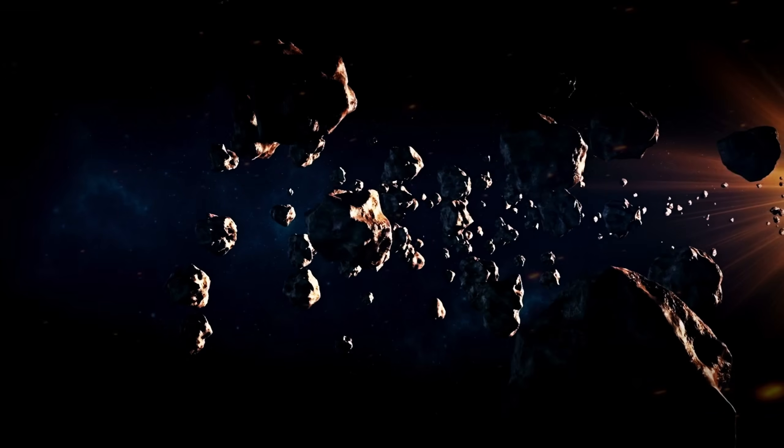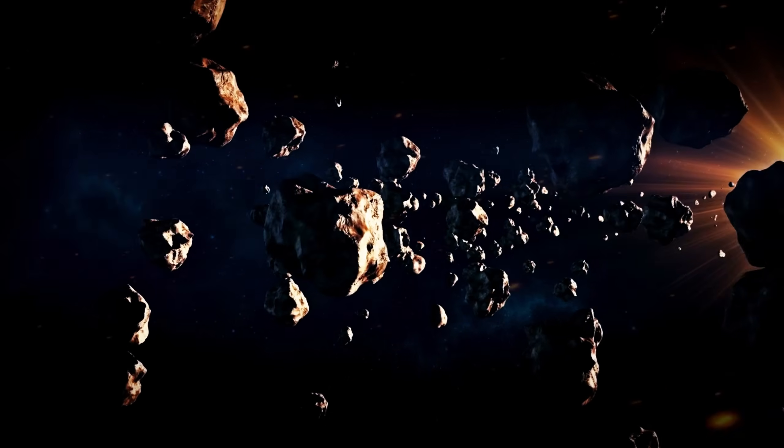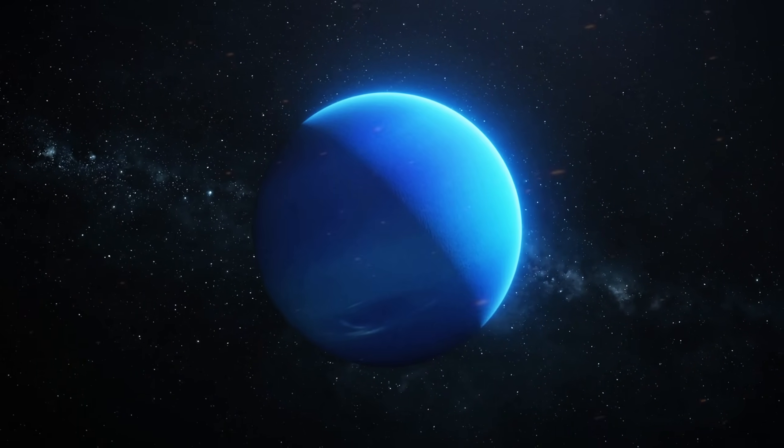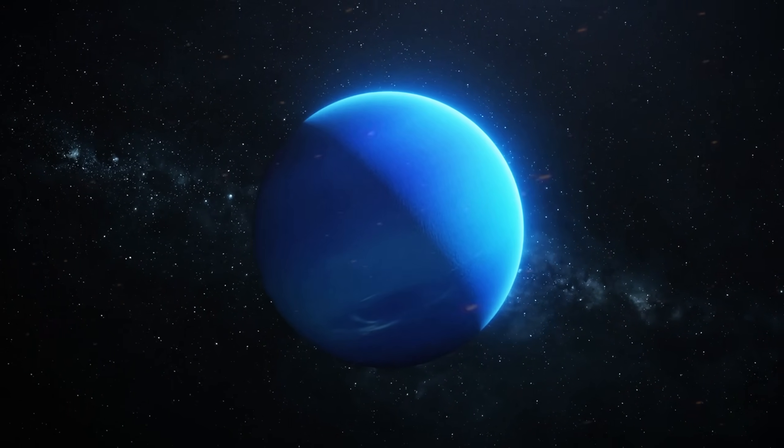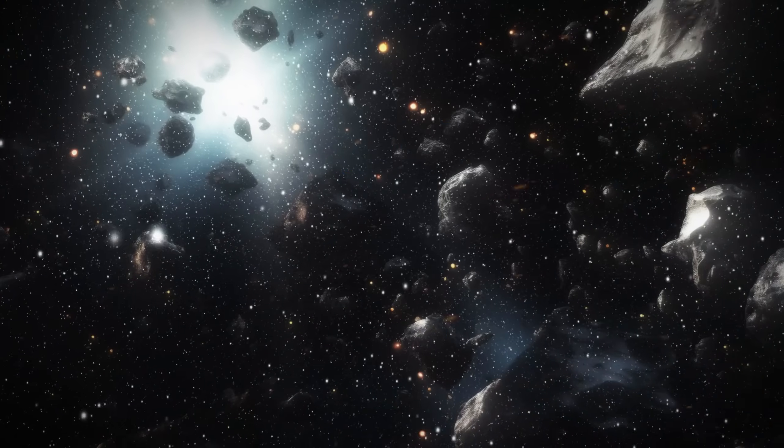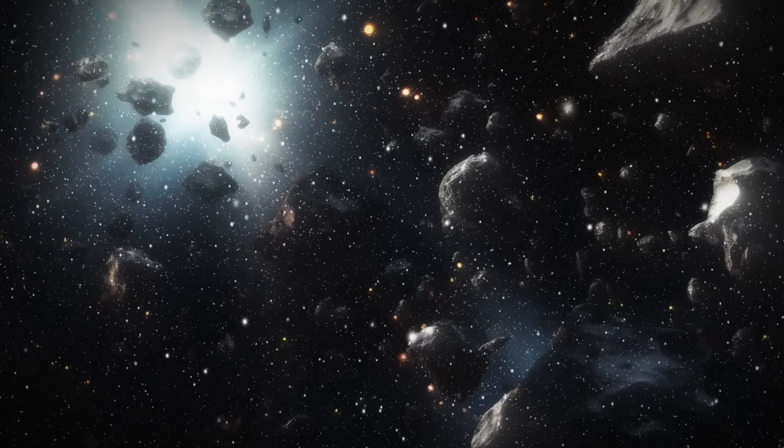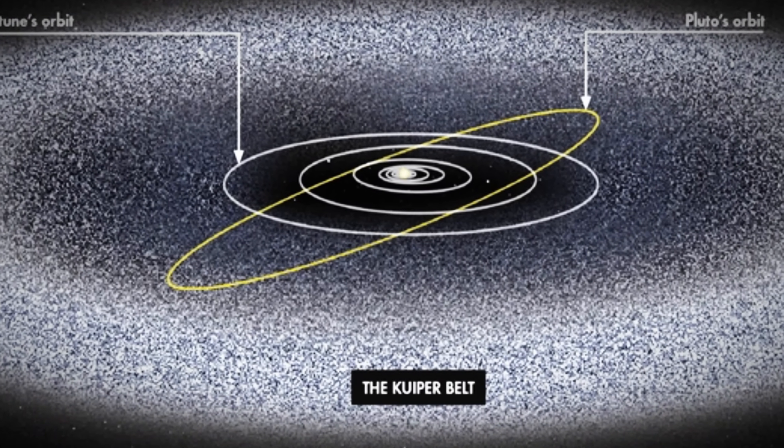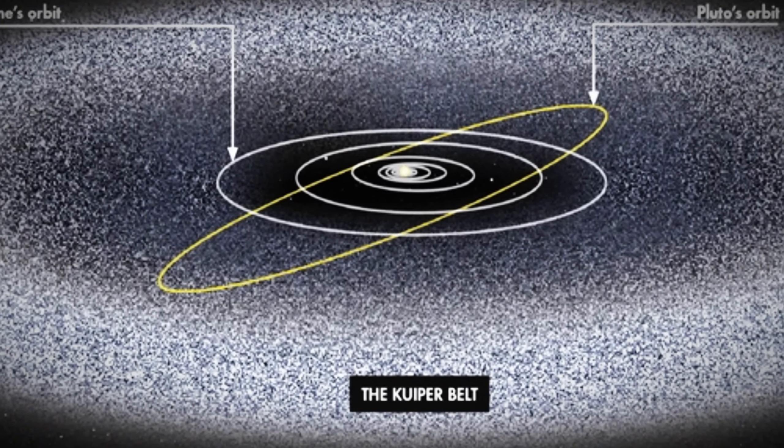While Pluto was once thought to be the main feature of the Kuiper Belt, we now know that Neptune's orbit defines the inner edge of the belt. Neptune's gravitational pull has played a critical role in shaping the movements within the Kuiper Belt. Although Kuiper's predictions didn't precisely align with what was eventually discovered, his groundbreaking ideas contributed to the formation of our current understanding of the Kuiper Belt.